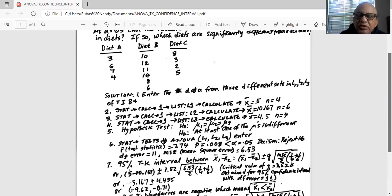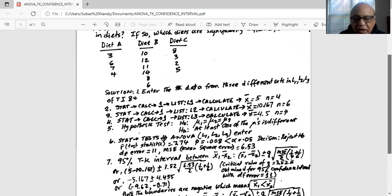The question now is which mu is significantly different. So for that we have to calculate the 95% TK interval between x1 bar minus x2 bar. 95% is like a 95% confidence interval for the difference in the means. And the formula for that is in parenthesis x1 bar minus x2 bar plus minus q times square root of mean square error which came from the ANOVA test divided by 2 in parenthesis 1 over 4 because there are 4 samples in diet A and plus 1 over 6, 6 samples in diet B.